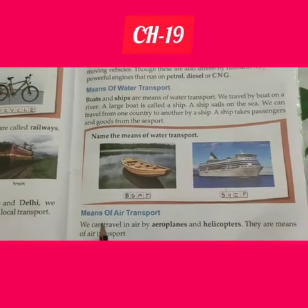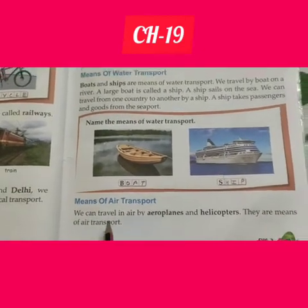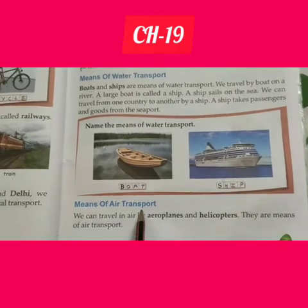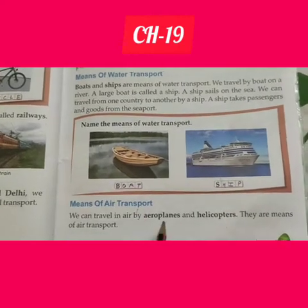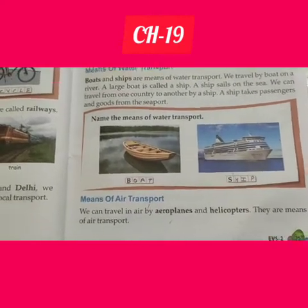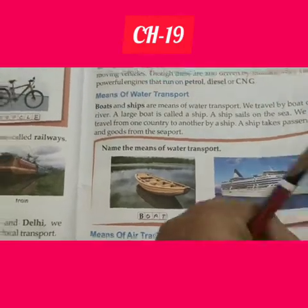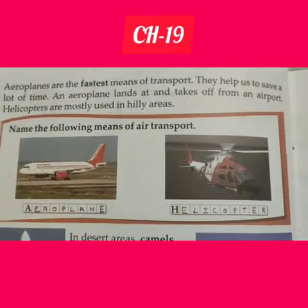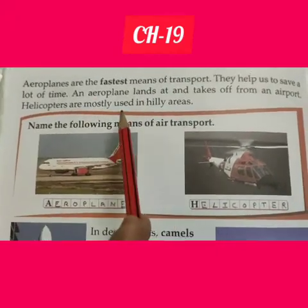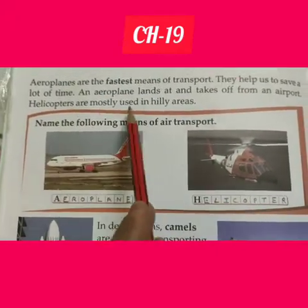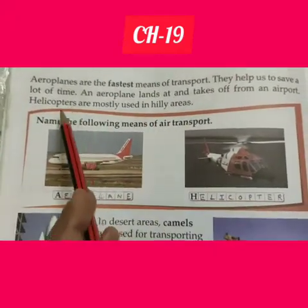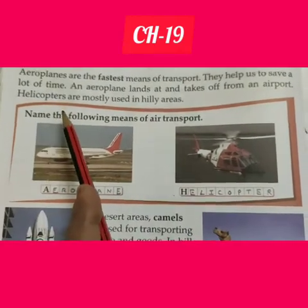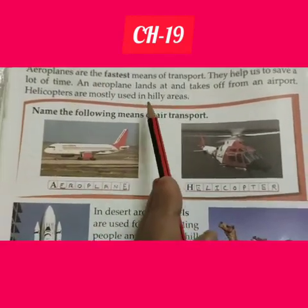Now, means of air transport. We can travel in the air by aeroplanes and helicopters — these are means of air transport. Aeroplanes are the fastest means of transport. They help us to save a lot of time.